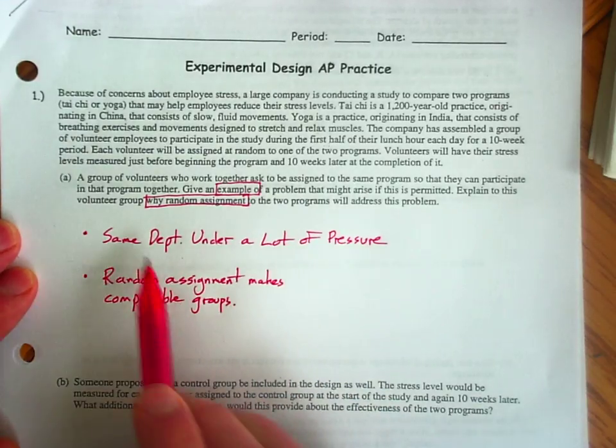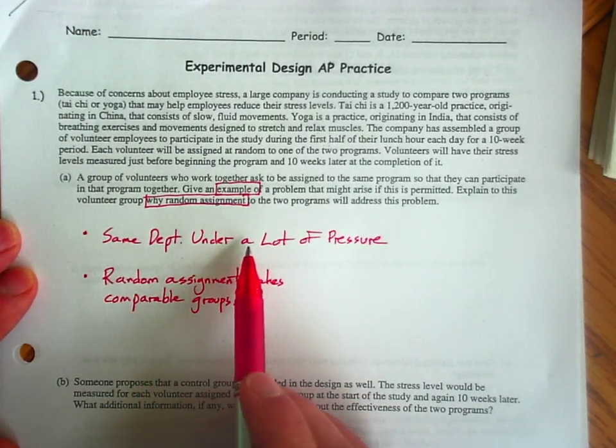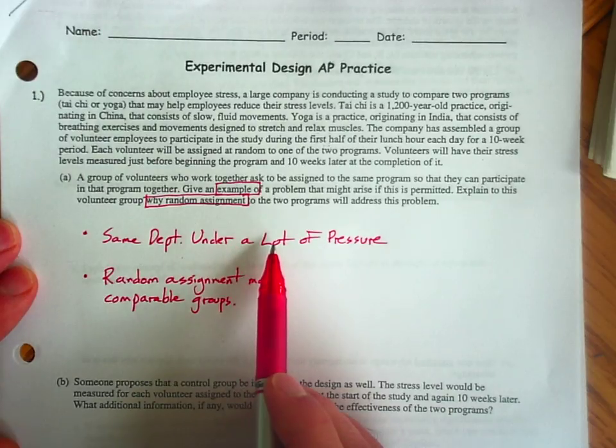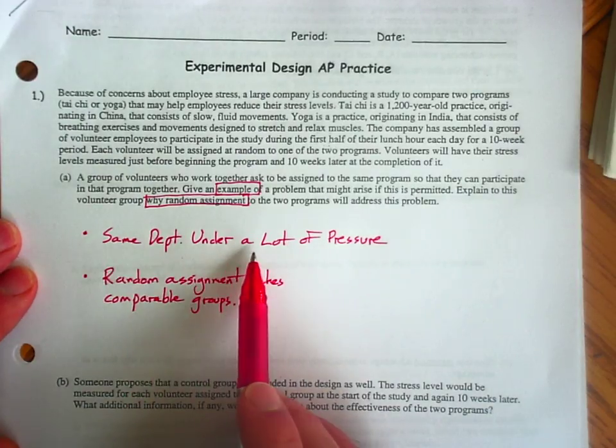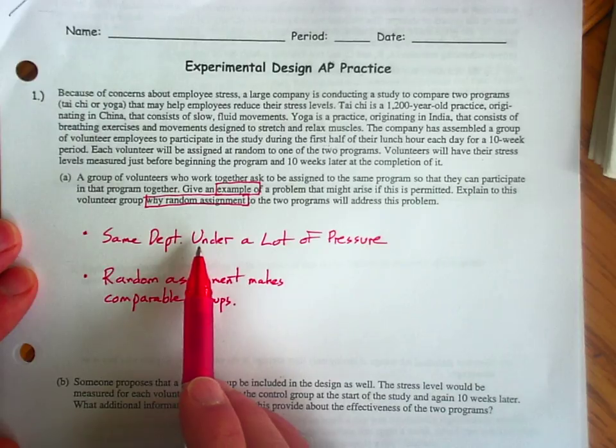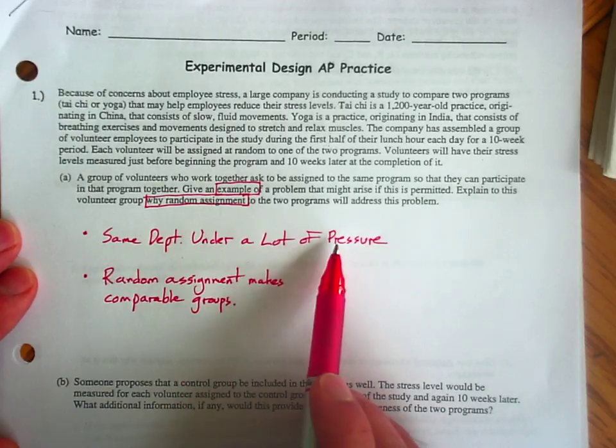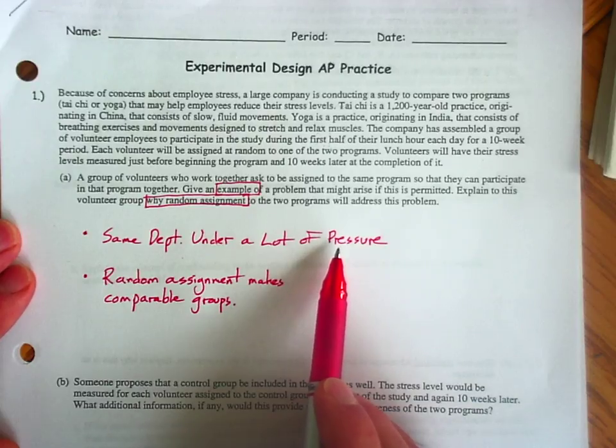Understand these individuals that wanted to participate together, if they are under a lot of pressure, if we randomly assign these individuals to one of the two treatments, the two treatment groups are now more comparable because there are individuals under that pressure in that department in both treatments. So that pressure is acting on both the Tai Chi treatment and the yoga treatment.